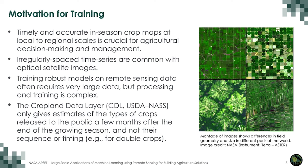Irregularly spaced time series are common with optical satellite images. Training robust models on remote sensing data often requires very large data, but processing and training is complex. The cropland data layer provided by the USDA's National Agricultural Statistics Service only gives estimates of the types of crops released to the public a few months after the end of the growing season, and not their sequence or timing.